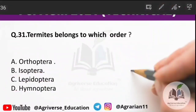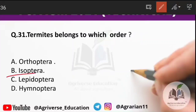Question 30: termites belong to which order? Options are Orthoptera, Isoptera, Lepidoptera, and Hymenoptera. The right answer is option B — Isoptera.